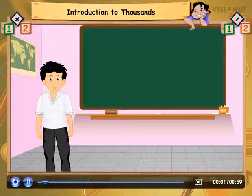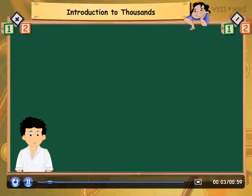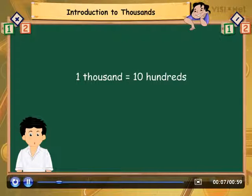Introduction to thousands. As we know, one thousand is nothing but the group of ten hundreds. It is numerically written as 1000.